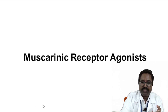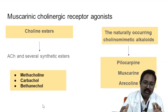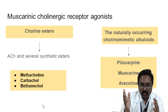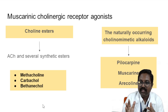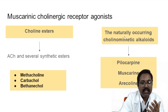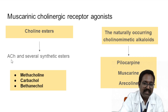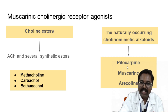Muscarinic receptor agonists can be classified into direct and indirect drugs. Direct muscarinic agonists are classified into choline esters and naturally occurring alkaloids. Choline esters include acetylcholine, methacholine, carbachol, and bethanechol. Naturally occurring cholinomimetic alkaloids include pilocarpine, muscarine, and arecoline.